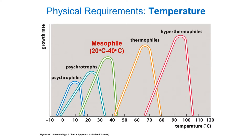We have prokaryotes that prefer things a bit warmer — those are the thermophiles. And we have hyperthermophiles, which prefer things really hot, sometimes hotter than boiling. Hyperthermophiles consist almost exclusively of members of the domain Archaea. We also have psychrotrophs that prefer things a little cooler than mesophiles, and psychrophiles that like things quite cold — prokaryotes and fungi that might do well in your refrigerator.